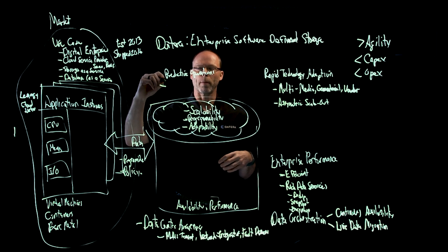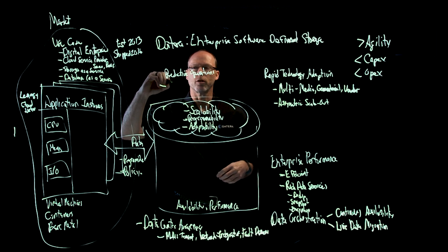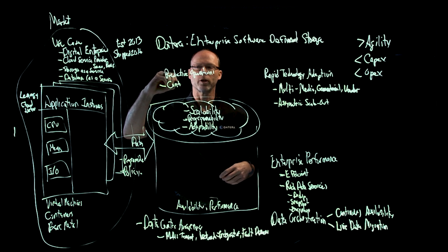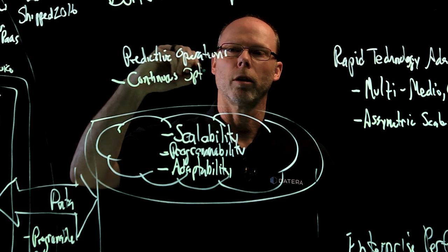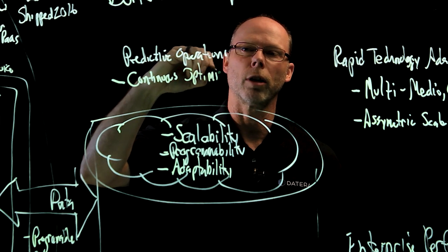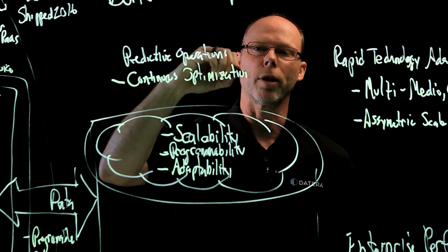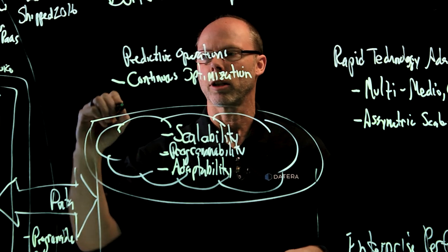Finally, we have predictive operations. Predictive operations is continuous optimization. The system is always collecting telemetry information, and it is analyzing that information to see if we can run the system more efficiently or better meet the SLAs.